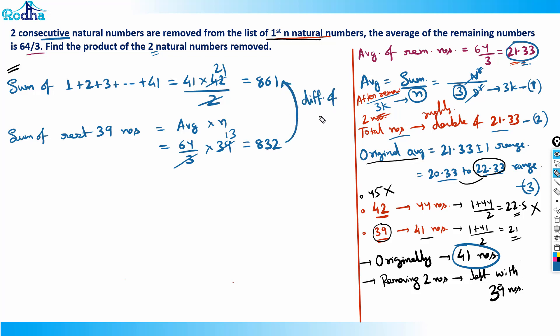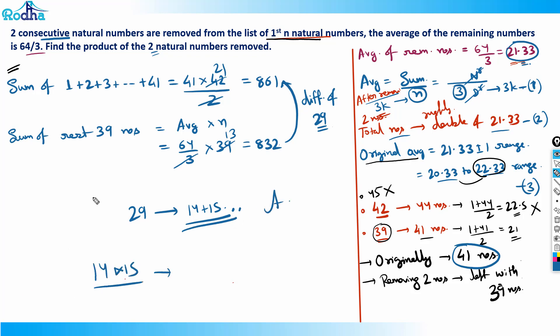Two consecutive natural numbers with sum 29: that's 14 + 15 = 29. So 14 and 15 are the two removed numbers. The question asks for their product: 14 × 15 = 210. That is the answer!